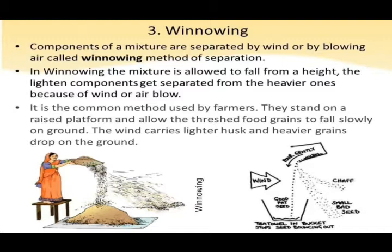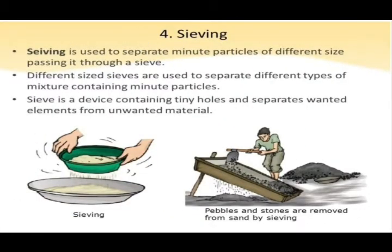Winnowing is a common method used by farmers. They stand on a raised platform and allow the threshed food grains to fall slowly to the ground. The wind carries the lighter husks away while the heavier grains drop on the ground. In this way, through wind, the heavier grains settle on the ground and the dust and lighter components all get separated.